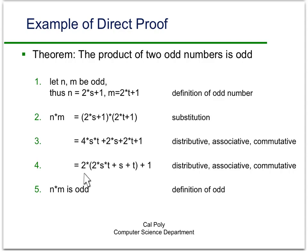Then if I rearrange things a little bit and factor out a 2, I get that that's equal to 2 times 2st plus s plus t. That's an integer. So this is 2 times an integer plus 1. So that means that's an odd number. So n times m is odd by the definition of an odd number.